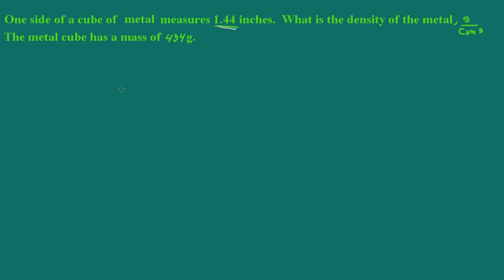Let's take a look at this problem. We're told that one side of a metal cube measures 1.44 inches, and we're asked what is the density of the metal in grams per cubic centimeter. The metal cube has a mass of 434 grams.